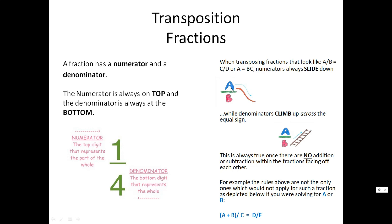Here I drew it out and I'm showing you a slice. Everything slides down and across the equal sign whenever you're trying to transpose, while denominators climb up across the equal sign. So everything happens across the equal sign in a diagonal fashion. Numerators slide down and across the equal sign, while denominators climb up ladders across the equal sign. This is also true once there are no addition or subtraction within the fraction facing each other.